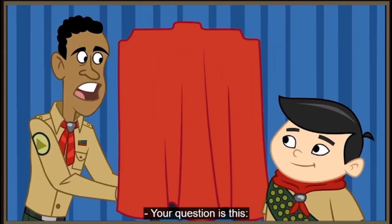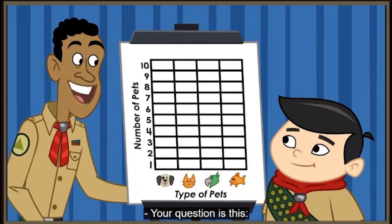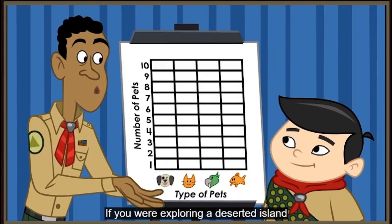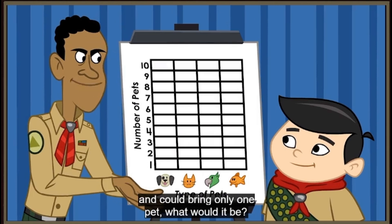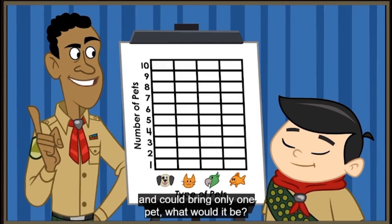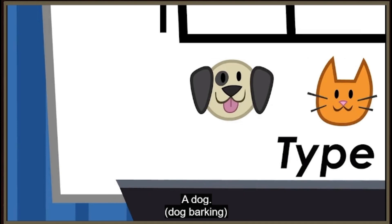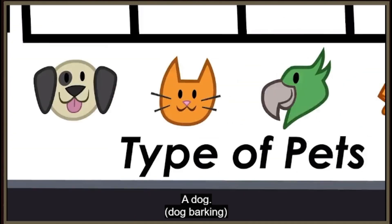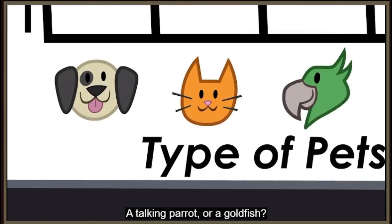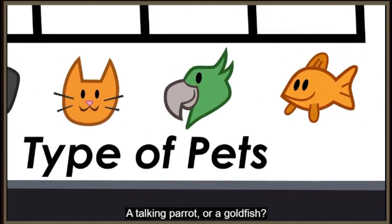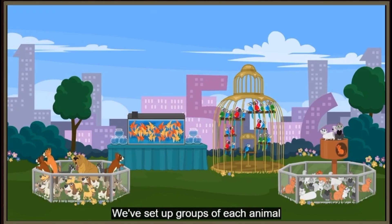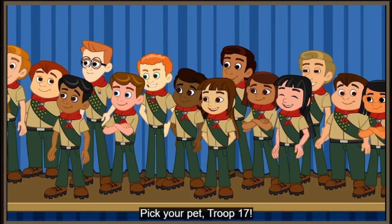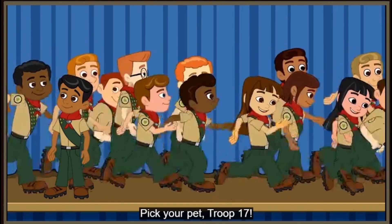Your question is this: if you were exploring a deserted island and could bring only one pet, what would it be? A dog, a cat, a talking parrot, or a goldfish? We've set up groups of each animal to choose from right over there. Pick your pet, Troop 17.